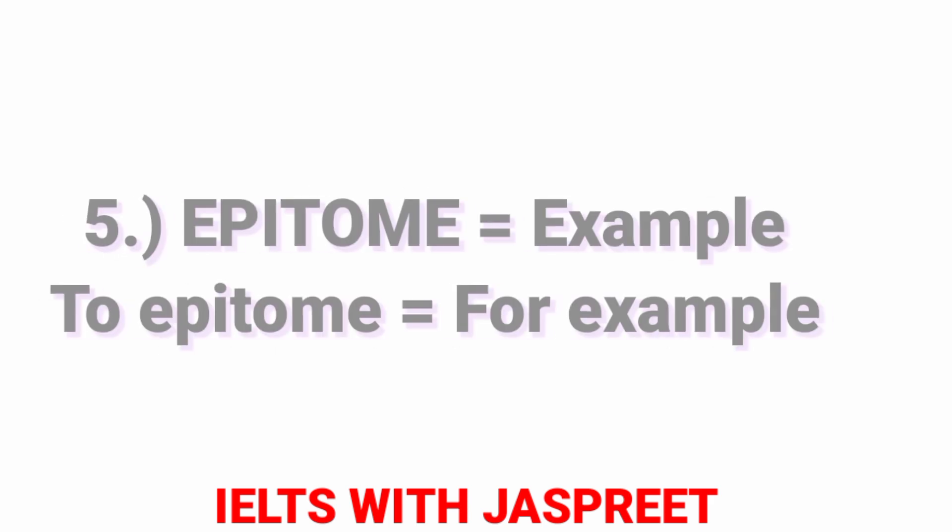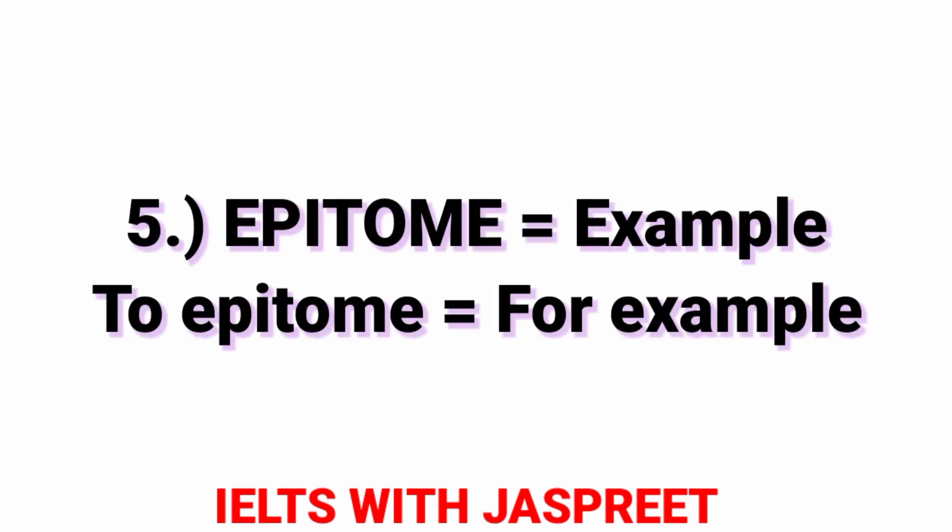The fifth word is 'epitome'. As you all know, we often write 'for instance' or 'for example' in task 2. So instead of writing 'example' in your task 2, you can write 'epitome'. When you need to write 'for example', you can use 'to epitome'.